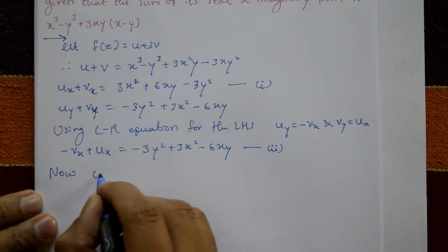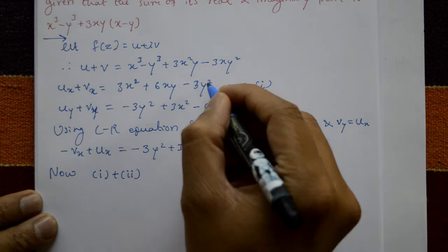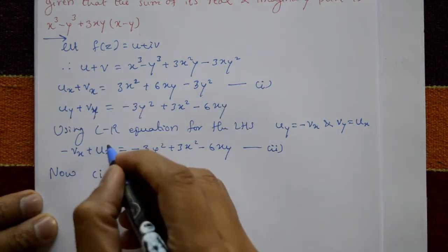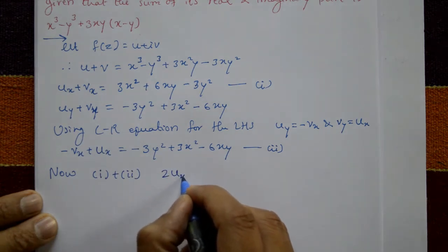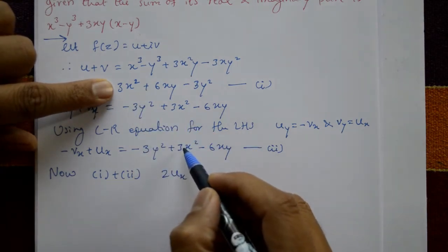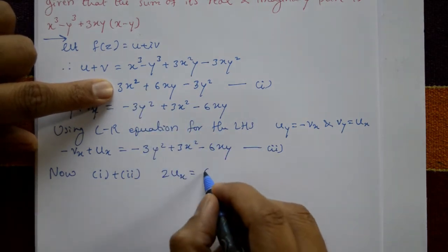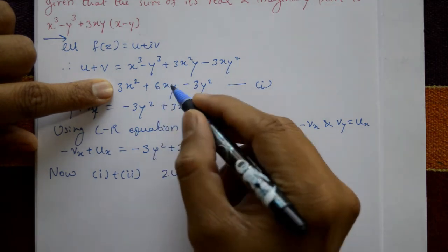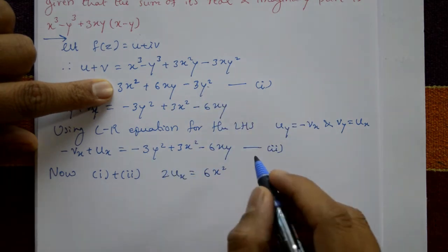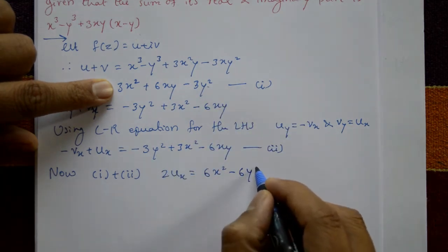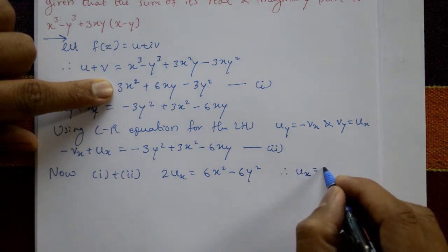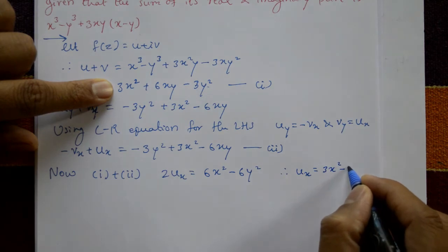Adding equation 1 and equation 2: the vx terms cancel, giving 2·ux = 6x² - 6y². Dividing by 2, we get ux = 3x² - 3y².